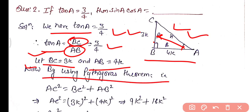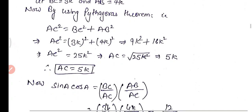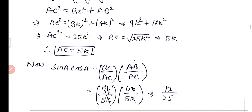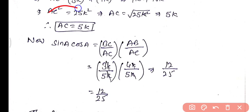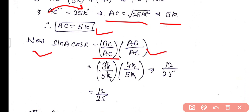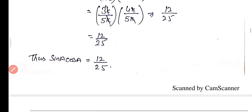By Pythagoras theorem: AC² = BC² + AB² = (3k)² + (4k)² = 9k² + 16k² = 25k², so AC = 5k. Now sin A × cos A = (BC/AC) × (AB/AC) = (3k/5k) × (4k/5k) = 12/25. So sin A × cos A = 12/25.